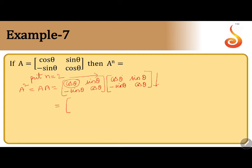First row, first column: cos θ into cos θ gives cos²θ, plus sin θ into minus sin θ gives minus sin²θ. Next, first row, second column: cos θ into sin θ, plus sin θ into cos θ, which is sin θ cos θ plus sin θ cos θ.